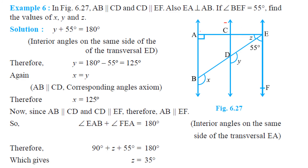In this figure, AB is parallel to CD and CD is parallel to EF. Also, this line is perpendicular to AB. If angle BEF is 55 degrees, we have to find angles X, Y, and Z. Since the total angle is 90 degrees (perpendicular lines), Z plus 55 degrees equals 90 degrees, so Z equals 35 degrees.